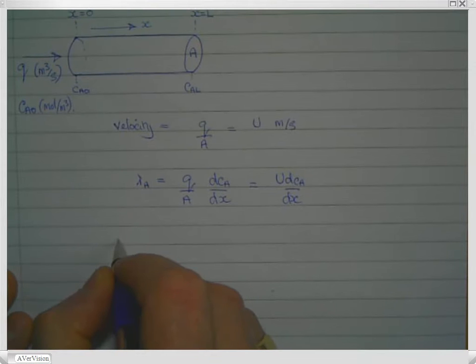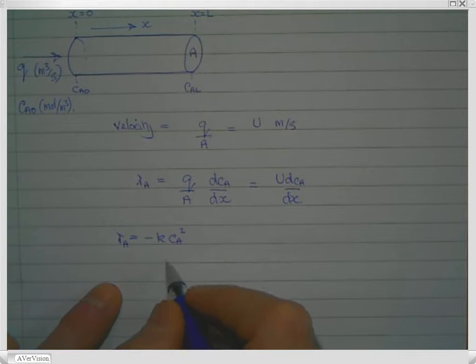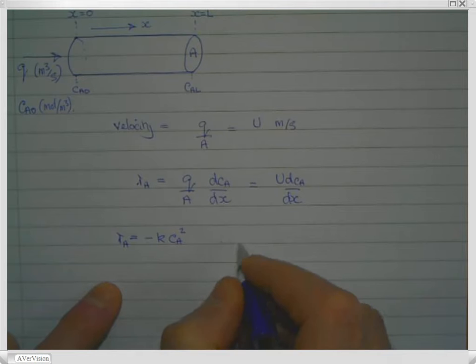And we're going to define our reaction rate now in terms of second-order kinetics. So I would say that RA is equal to minus K times Ca squared. So it's minus because it's the reaction rate of A, which is being consumed, and we're going to take the simple case of second-order and assume that it's second-order in our starting material A.